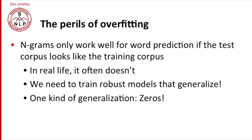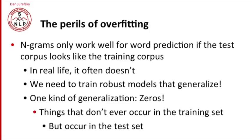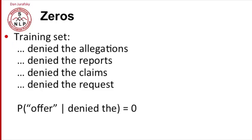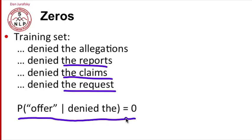And I want to talk about one kind of generalization, which is dealing with zeros. So by zeros, I mean things that never occurred in the training set but do occur in the test set. So let's look at some zeros. Imagine that in the training set we had phrases like denied the allegations, denied the reports, denied the claims, denied the request. And we never saw denied the offer. So the probability based on maximum likelihood estimation of offer given denied the is zero.